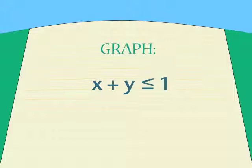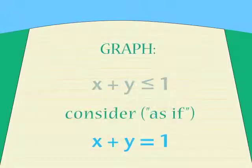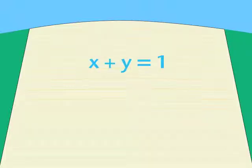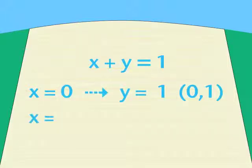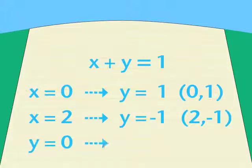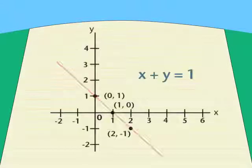Suppose we want to graph an inequality like this. Using the same idea we applied to the number line, we pretend the inequality is an equation with an equals sign, even though it isn't. That makes it an equation in two variables, and you know how to graph them. Pick a couple of points that satisfy the equation. If x equals 0, then y is 1. If x equals 2, then y is negative 1. If y is 0, then x is 1. Plot the graph — it should be a straight line.